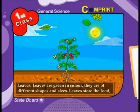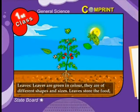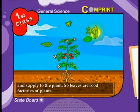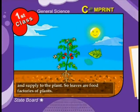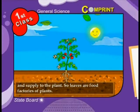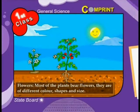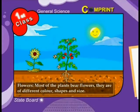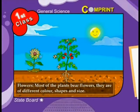Leaves: leaves store the food and supply it to the plant, so leaves are the food factories of plants. Flowers: most of the plants bear flowers. They are of different colors, shapes, and sizes.